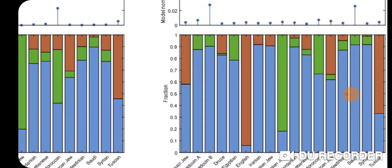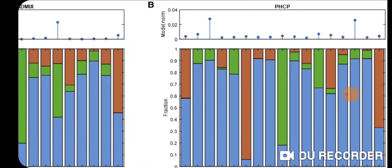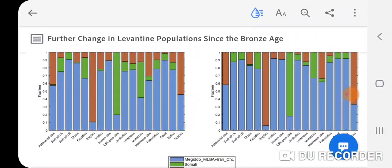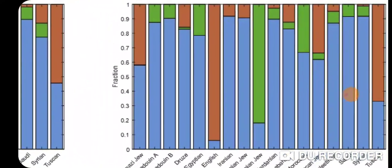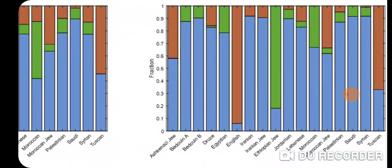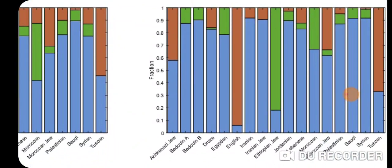Let's take a look at the results of the PHCP. Very similar results: Ashkenazi Jew, Bedouin A, Bedouin B, Druze, Egyptian, English, Iranian, Iranian Jew, Ethiopian Jew, Jordanian, Lebanese, Moroccan, Moroccan Jew, Palestinian, Saudi, Syrian — I think I forgot to mention Syrian before — and Tuscan.